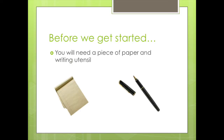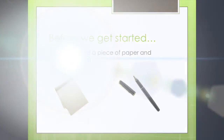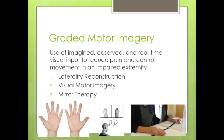Graded motor imagery is a neurotechnique used by occupational therapists as part of a comprehensive plan of care to reduce pain, encourage motion, and restore typical movement patterns in individuals with impaired limb conditions. This technique has been referred to in the literature as mirror visual feedback, mirror therapy, and more.